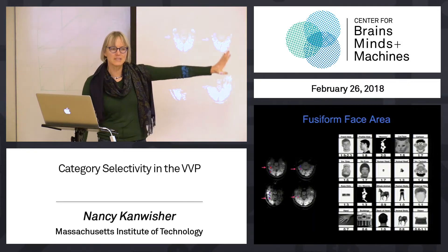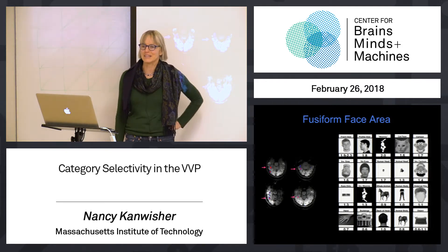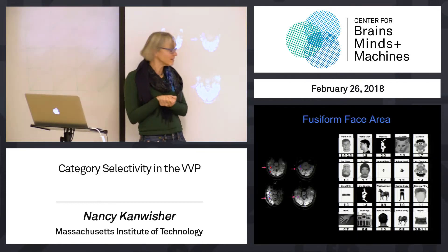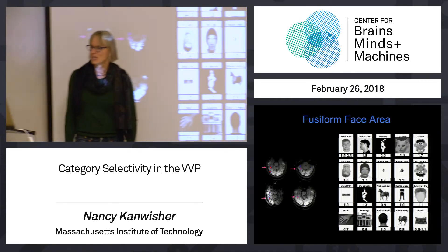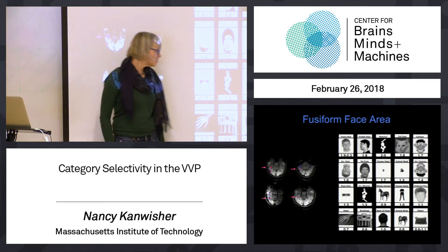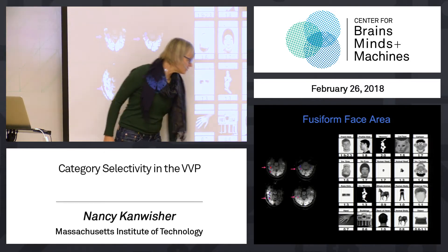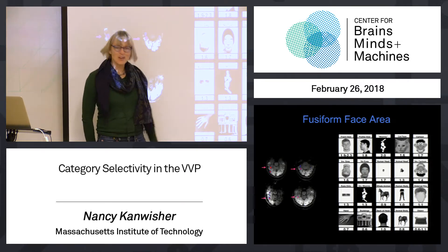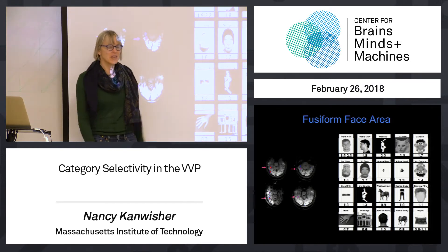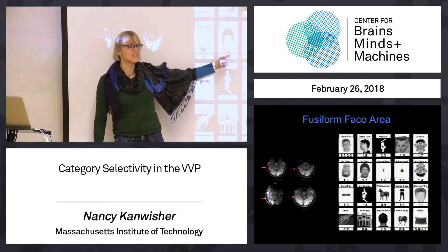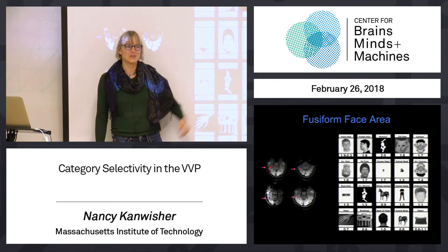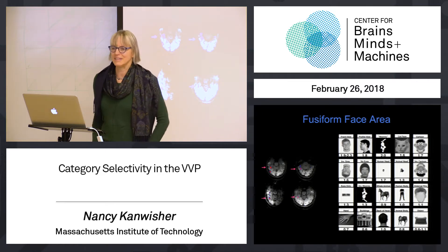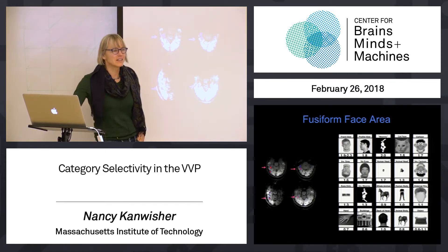This is a sketch of the evidence that the fusiform face area responds very selectively to faces. There are lots of different kinds of face stimuli that all produce a very strong response there, and lots of different kinds of control stimuli that produce a much lower response. Backs of heads: much lower — so it's not just any human head. Animals without their faces showing: low response. Large objects, hands — all of these things enable you to triangulate. In some cases, an inverted face or a face missing eyes still gets a strong response, but lower than the whole face, all of which is consistent with the idea that that region is selectively responsive to faces.